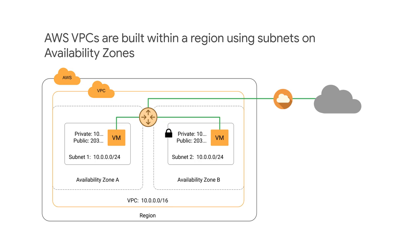A VPC must be built with CIDR, or Classless Interdomain Routing, which is a range of private IP addresses that conform to RFC 1918. All subnets in a VPC must have private IP ranges that are part of the VPC CIDR range.